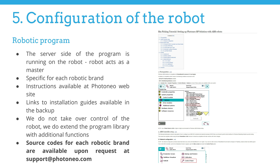One of the specific routines running on every system is the so-called state server. This is a program which broadcasts the kinematic state of the robot several times per second. This information is used for the purpose of visualization as well as for the robot to camera calibration function.